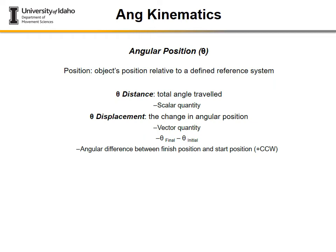Now we'll talk about angular position, velocity, and acceleration — very similar to linear kinematics but with different units and directional conventions. Angular position is abbreviated as theta and is a measure of the angle, which can be expressed in degrees, radians, or revolutions. It describes an object's position relative to a defined reference system.